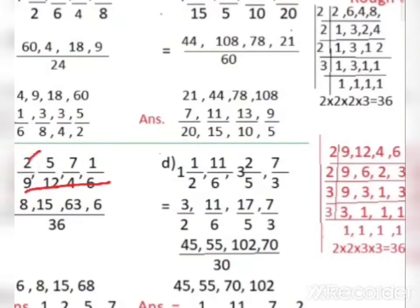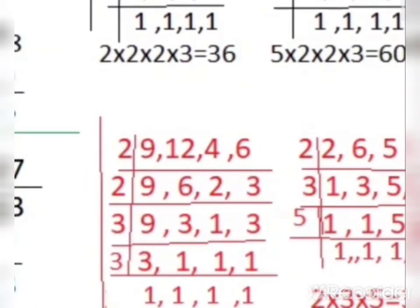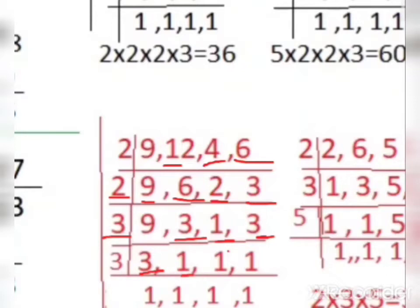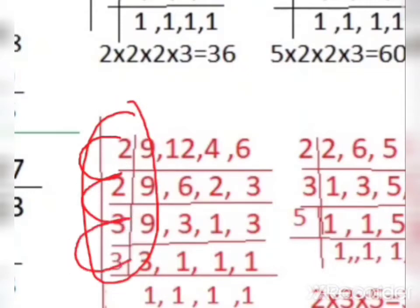We need to find LCM of 9, 12, 4, and 6 to convert to like fractions. Divide by 2: 9 stays as it is, 12÷2=6, 4÷2=2, 6÷2=3. Divide by 2 again: 9 stays, 6÷2=3, 2÷2=1, 3 stays. Now divide by 3: 9÷3=3, 3÷3=1, 1 stays, 3÷3=1. Divide by 3 again: 3÷3=1, 1 stays, 1 stays, 1 stays. When all quotients are 1, we stop. Multiply prime factors: 2×2=4, 4×3=12, 12×3=36. LCM = 36.